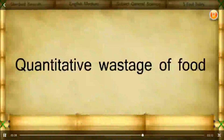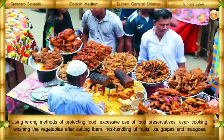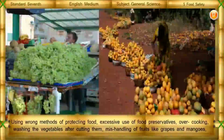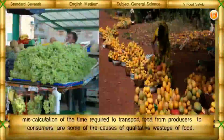Qualitative wastage of food: Using wrong methods of preserving food, excessive use of food preservatives, overcooking, washing vegetables after cutting them, mishandling of fruits like grapes and mangoes, and miscalculation of the time required to transport food from producers to consumers are some of the causes of qualitative wastage of food.